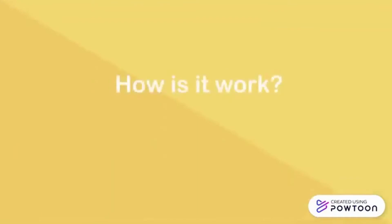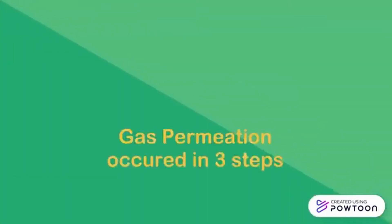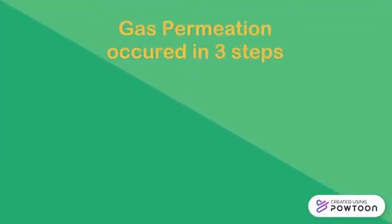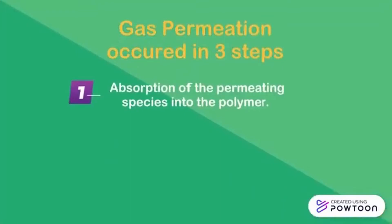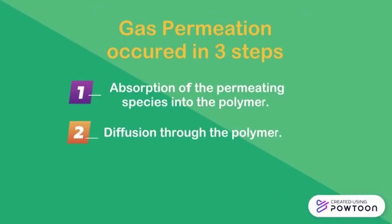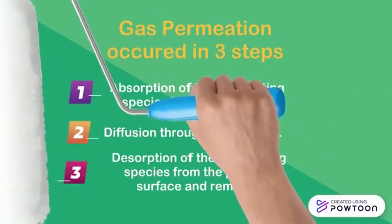Gas permeation works by pressure difference. Gas permeation occurs in three steps. First is the absorption of the permeating species into the polymer. Second is the diffusion through the polymer. And third is the desorption of the permeating species from the polymer surface and removal.